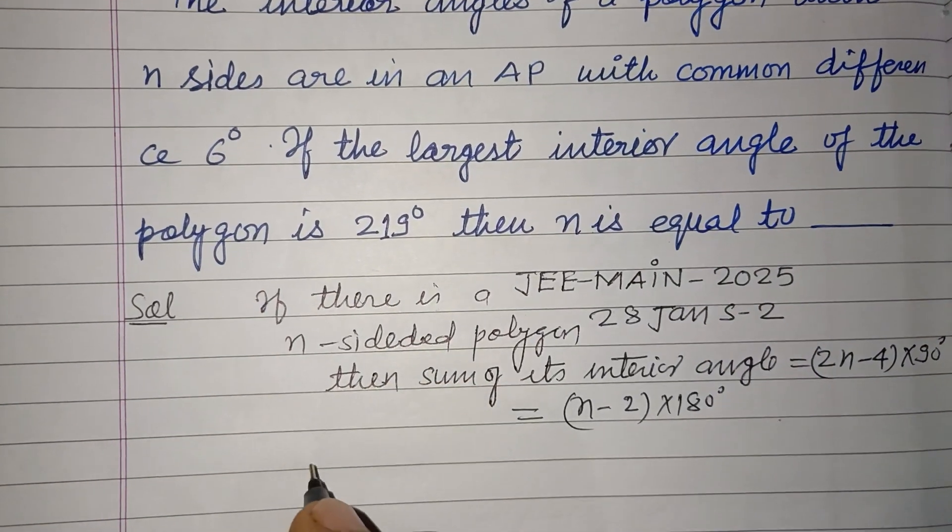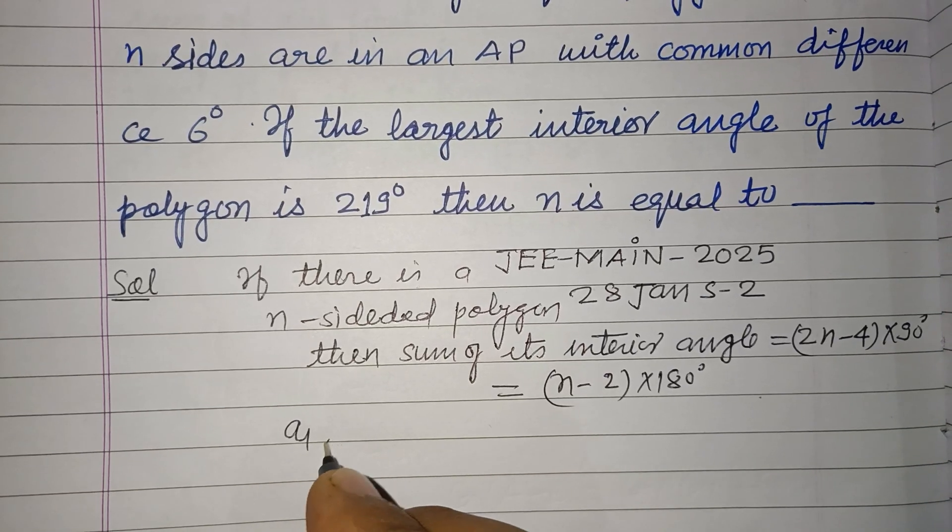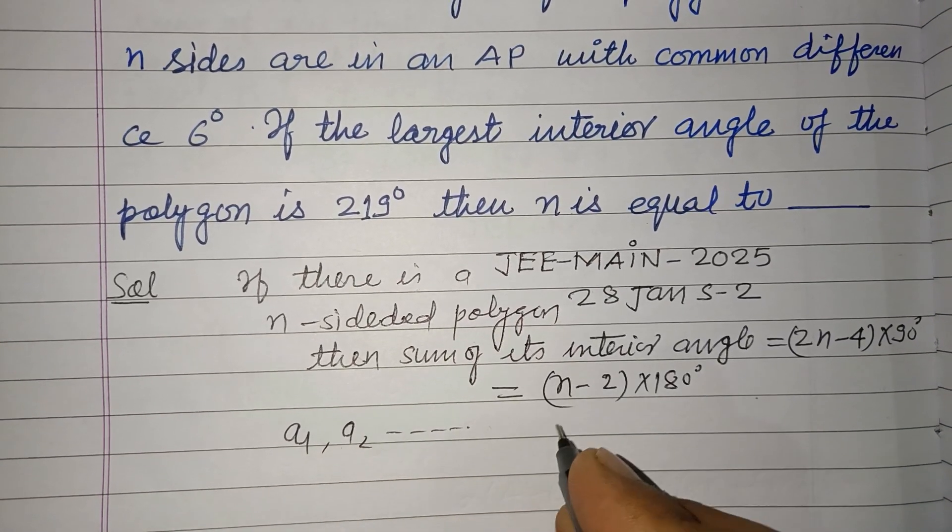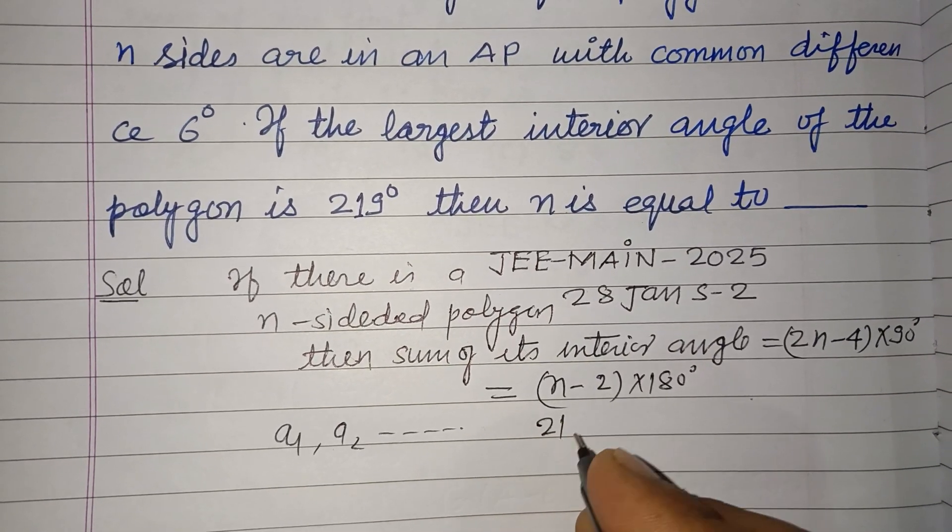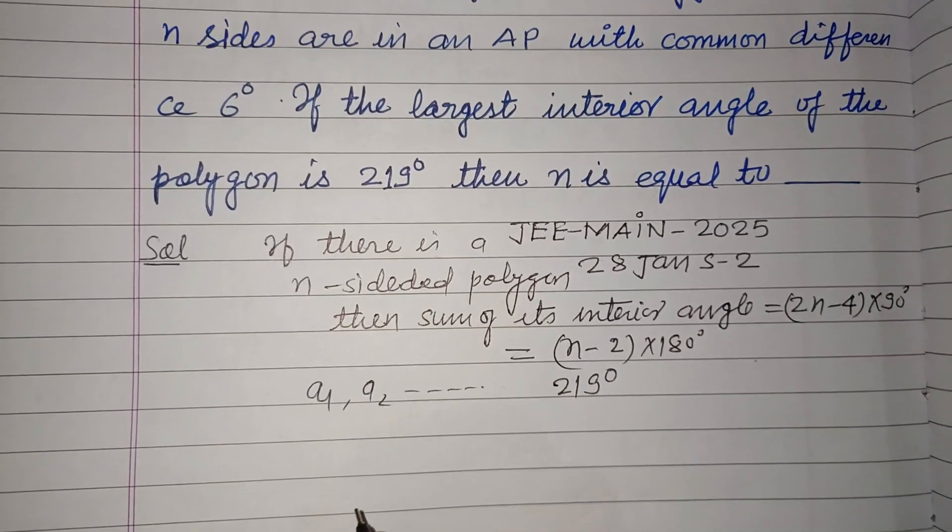Since angles are in AP, let them be a₁, a₂, a₃ and so on. The largest angle, which is the last angle, is 219 degrees.